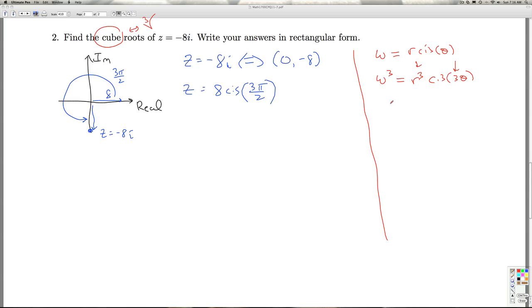So if I want to undo this, if I want to take a cube root, that's like the one-third power. So the opposite of taking this real number to the third power would be taking the cube root of that real number. And the opposite of multiplying by 3 would be dividing by 3 or multiplying by one-third. And that's how you start.